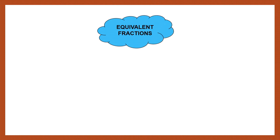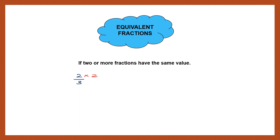Then, we have equivalent fractions. What are equivalent fractions? If two or more fractions have the same value, then they are called equivalent fractions or equal fractions. Let's take some examples. Let me take a fraction 2 by 3. If I multiply the numerator by 2 and the denominator by 2, I get 4 by 6. So, the first fraction I had was 2 by 3, and the second fraction I got is 4 by 6.